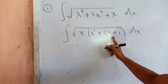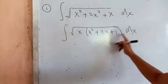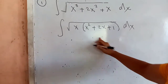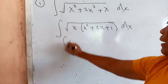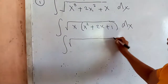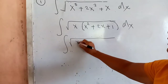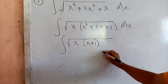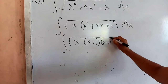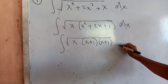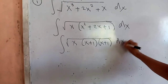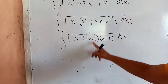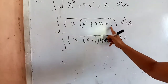Again inside the radical, note that this trinomial is a perfect square. The factor of that will be the square root of x, times (x plus 1), then multiplied by (x plus 1), then times the differential dx — because when you multiply these two, the product will be x times the square root of (x plus 1).